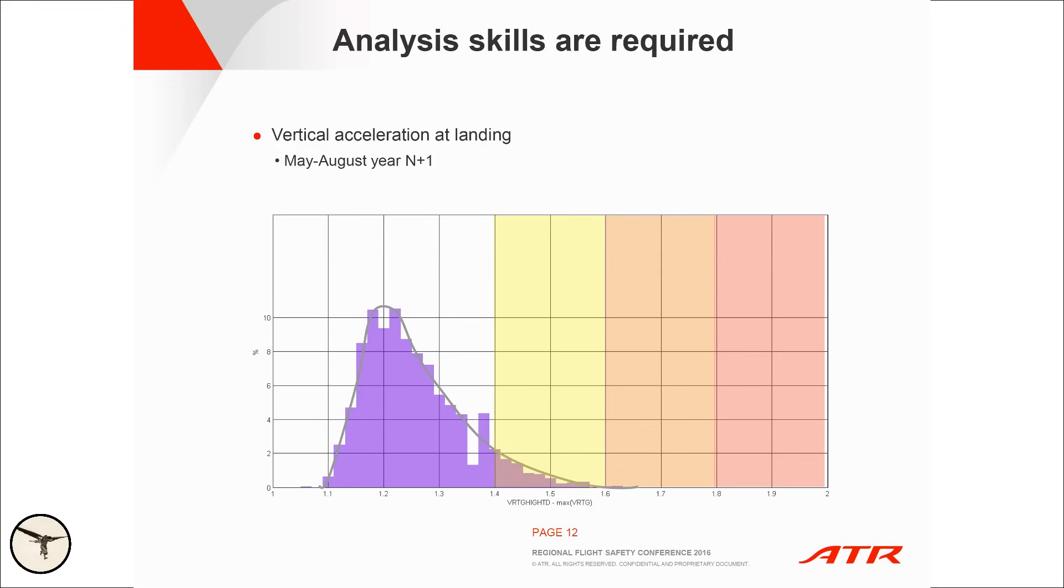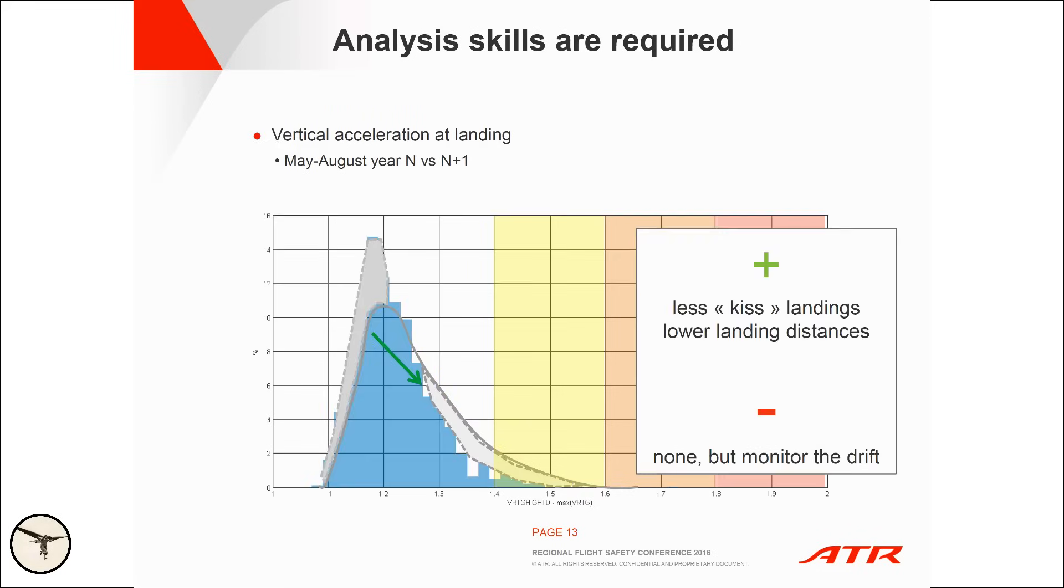So the question is, is it bad, is it good? In fact, that's pretty good. It's pretty good. Why? Because the low G touchdowns indicate very soft landings, kiss landings, grease landings, whatever you call it. And what's the most adverse consequence of those landings is high flare distance, generally high energy. And that's why approaches with fewer kiss landings are better.